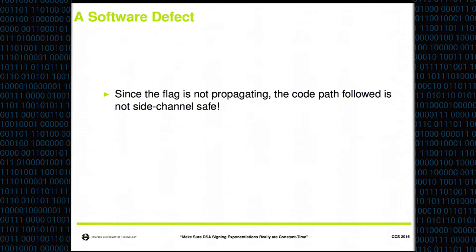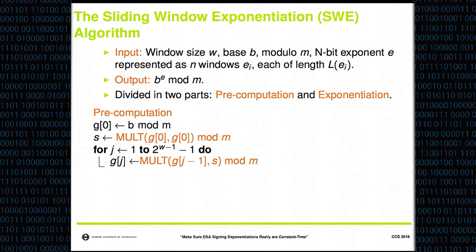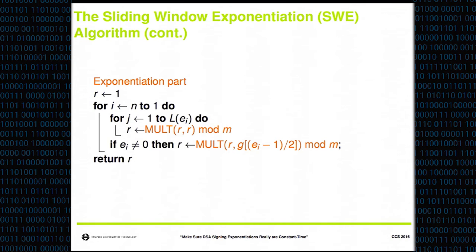The flag is not propagating, the code path followed is not side-channel safe, and a non-constant-time algorithm is in use: the sliding window exponentiation algorithm. It consists of two parts: a pre-computation where a table is computed with a square and several multiplications, and then those are used to perform the actual exponentiation. If a bit is zero, it performs a squaring; if it's one, it computes a multiplication.